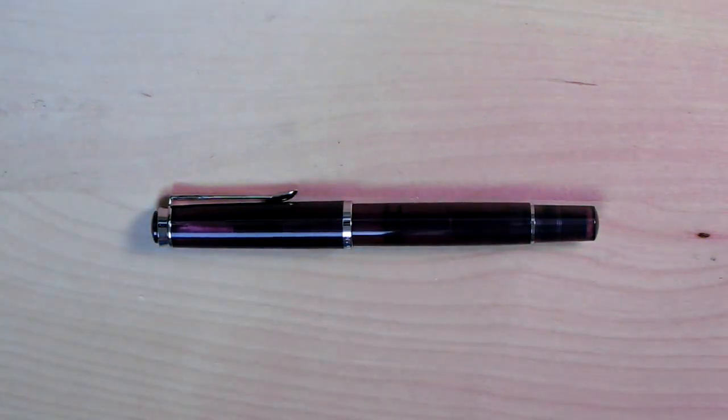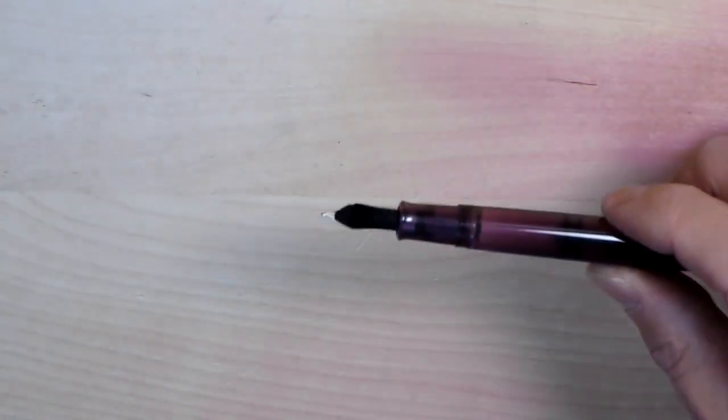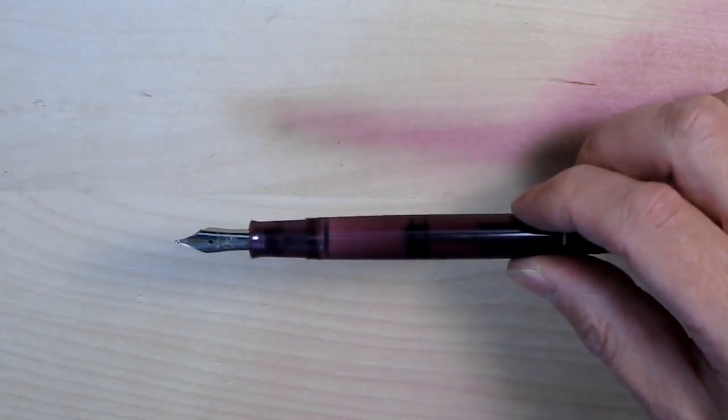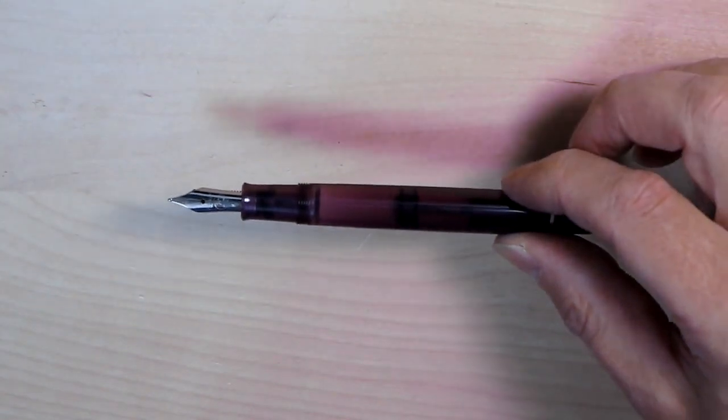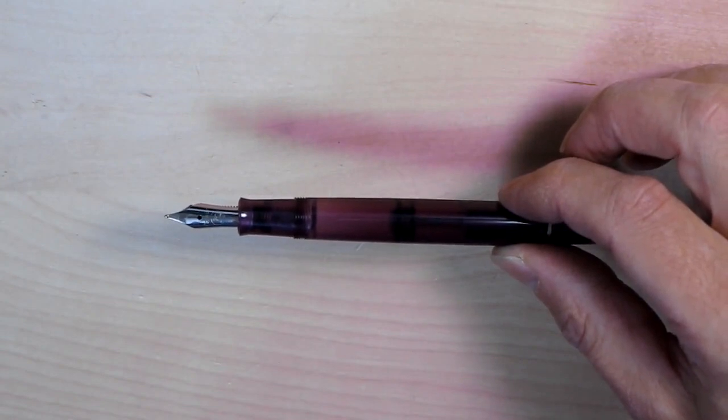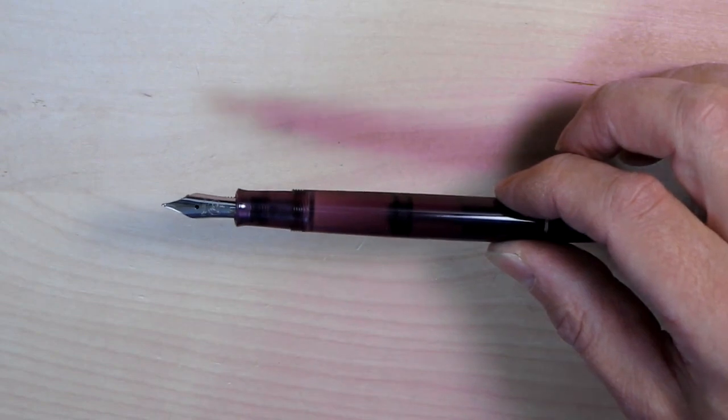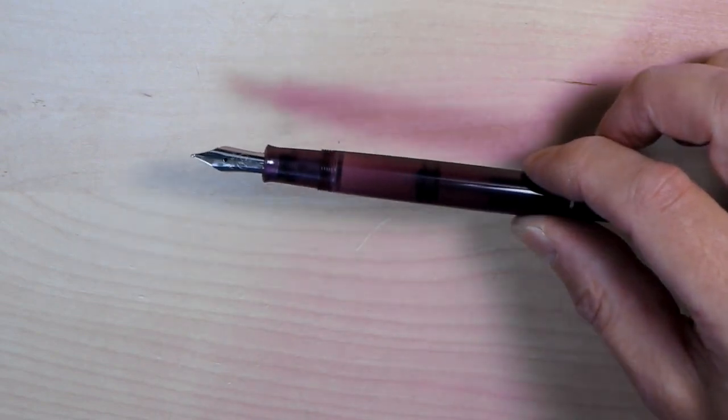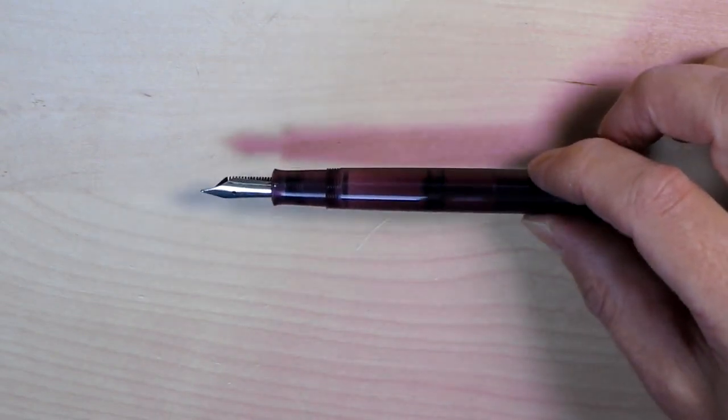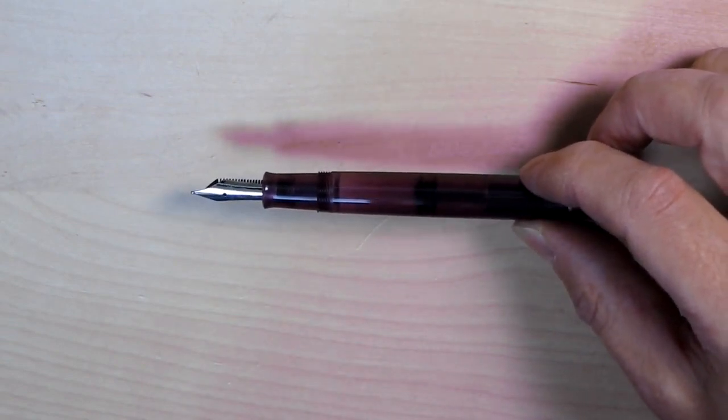Like most Pelican models in this range, it features a piston filling mechanism. This gives you about 1.7 cc's of ink capacity compared with only about 0.8 cc's for a standard size cartridge. This means that you can write longer between refills and is therefore more convenient. But please note that it's bottled ink only; you cannot use cartridges with this type of fountain pen.